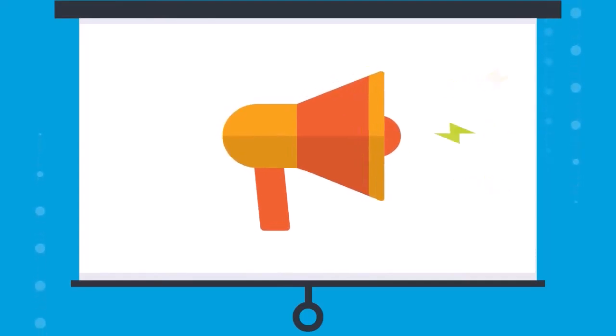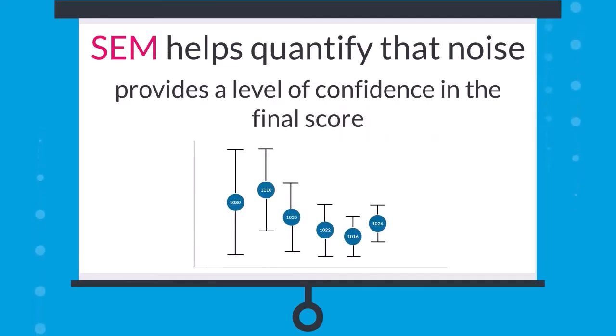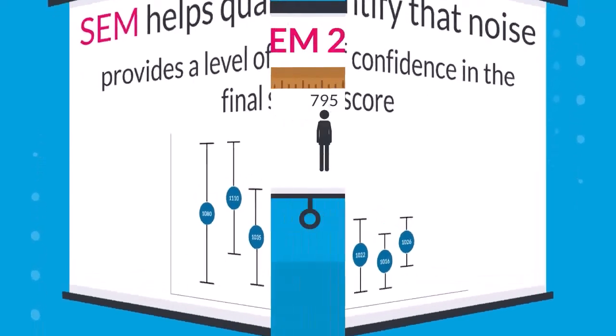Given all of this information, it's probably not surprising to hear that there is always some noise in measurements. That's entirely normal. The SEM helps you quantify that noise and provides a level of confidence in the final score. Be sure to consider the SEM when comparing scores across students and when interpreting student growth from one testing window to the next.